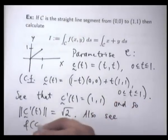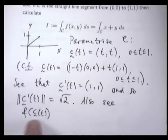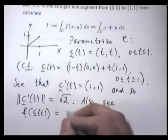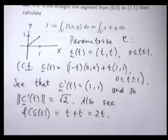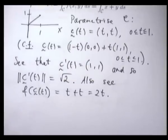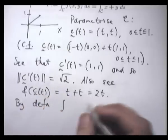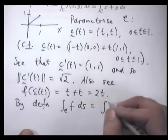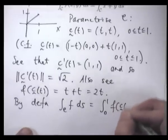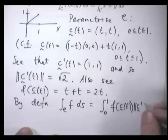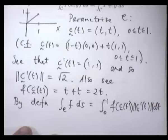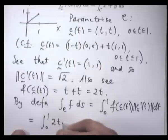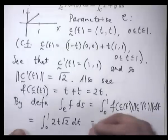So now we need to evaluate f along our parameterization. So f of c(t), we go up here and we replace x with t and y with t, so it's going to be 2t. Okay, so by definition, the path integral of f over c is just going to be the integral from 0 to 1 times this integral here. So essentially I'm integrating this. If I integrate that, I'll get root 2.